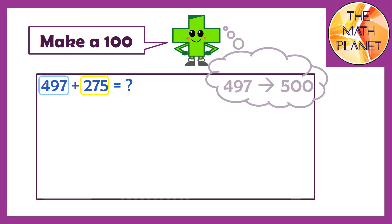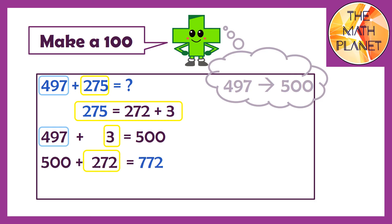So you will break apart 275 into 272 plus 3. Add the 3 ones first to 497 to get 500. Then you can add the rest of the number to get the final sum which is 772.